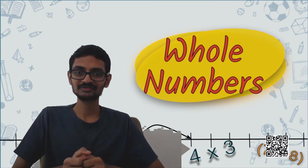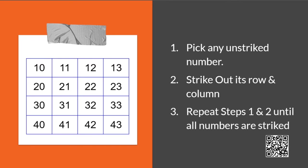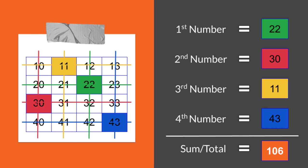What was the trick? I will show you quickly. From the grid of numbers, each time we choose a number from the unstruck boxes. Then we strike down its row and column. This should be repeated until no number is left. Then you all witnessed that no matter which numbers we chose, we always got the same sum.